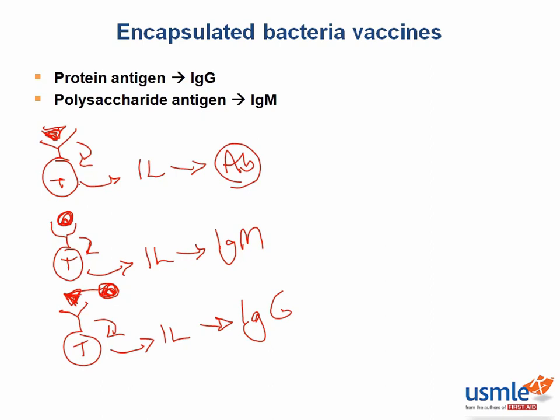This is how vaccines for Strep pneumo, H. flu, and Neisseria meningitidis function to produce protective immunity.